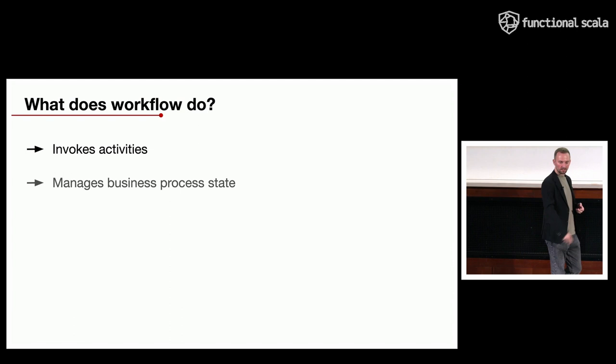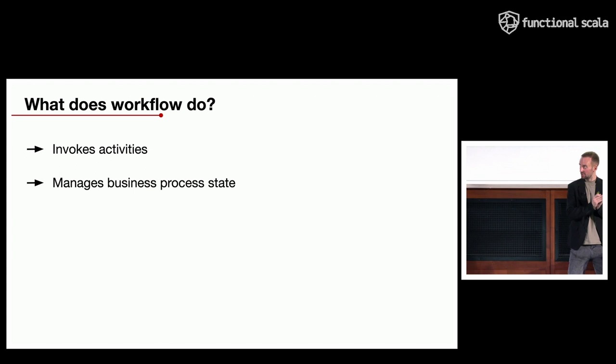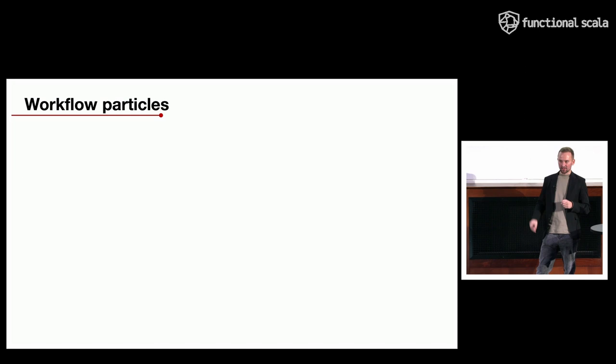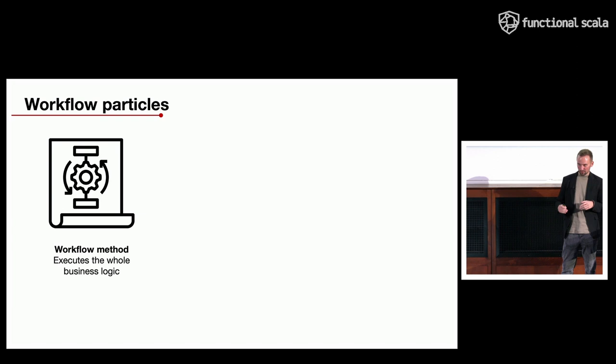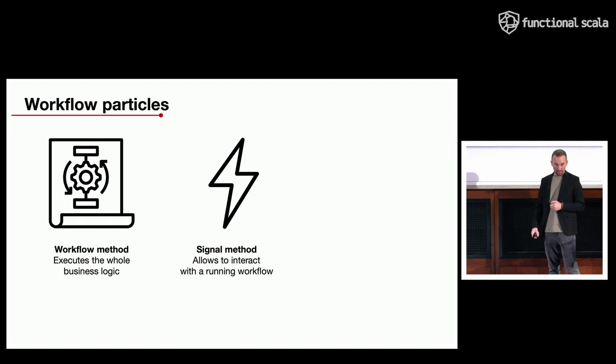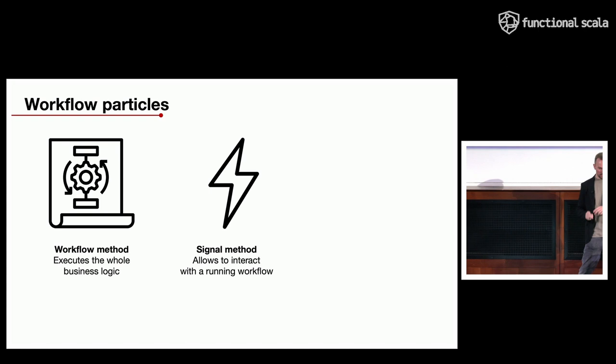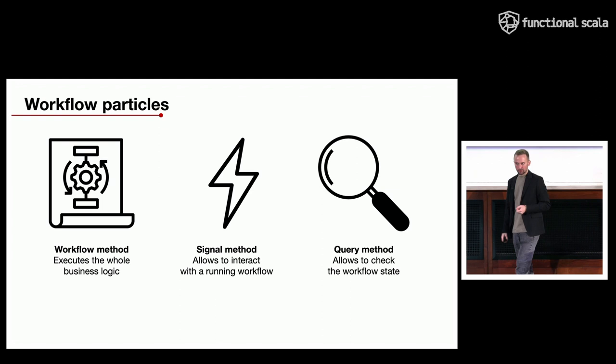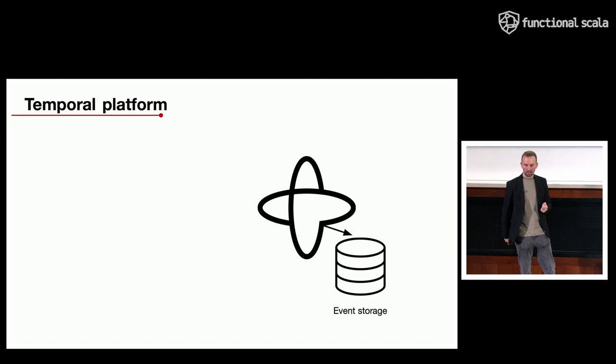The workflow also manages the state of the business process, like the concrete stage of our cryptocurrency exchange process. The workflow itself consists of three main parts: the workflow method, which is the business logic itself; the signal method, which allows you to interact with the workflow from the outside by sending events; and the query method, which lets you check the current state of a running workflow.